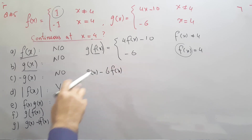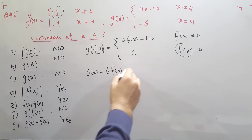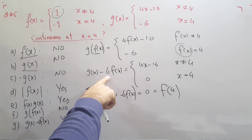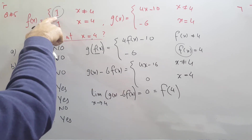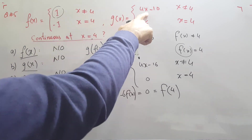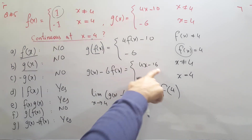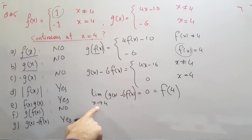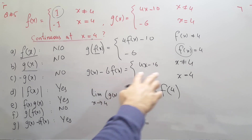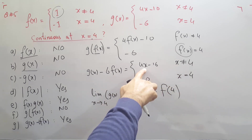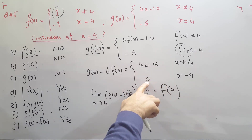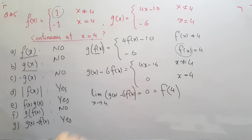For g(x) − 6·f(x), we compute this combination. Multiplying −6 by f(x) and adding to g(x) gives 4x − 16, and simplifying yields 0. Applying the limit as x approaches 4: substituting gives 16 − 16 = 0, and the function value at x = 4 is also 0. Both values are equal, so g(x) − 6·f(x) is continuous at x = 4.